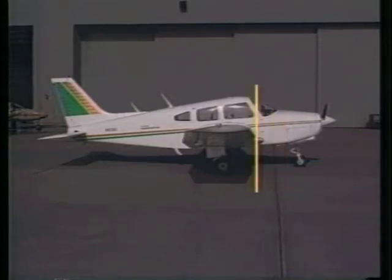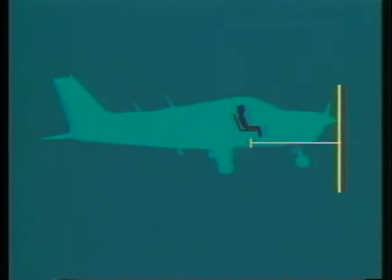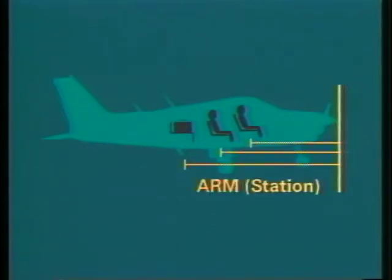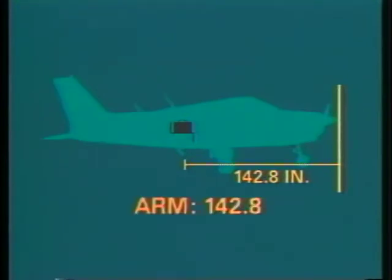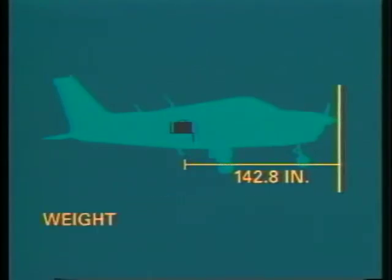For this airplane, the datum is located at the nose. The center of gravity for every component is located in relation to this point. The longitudinal distance in inches from the datum is called the arm or station. Since the baggage area for this aircraft is located 142.8 inches aft of the datum, its arm is considered to be 142.8. If you multiply the weight of an object by its arm, you get its moment.